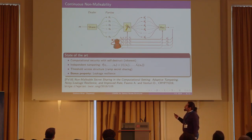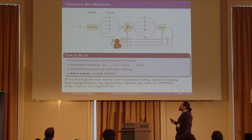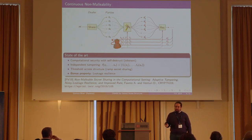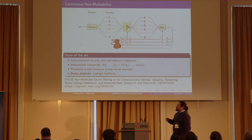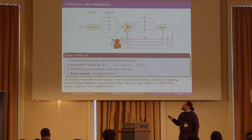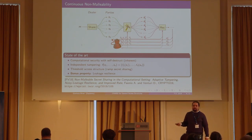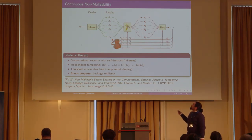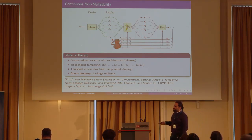They also prove that it is impossible to achieve continuous non-malleability in the information-theoretic setting or without the self-destruct feature. They achieve security against independent tampering for threshold access structures, where an authorized subset is authorized if and only if the number of parties is above a certain threshold. Actually, they achieve security for a slightly weaker version called RAM secret sharing, with a gap between the privacy threshold and the reconstruction threshold. As a bonus, they obtain leakage resilience.